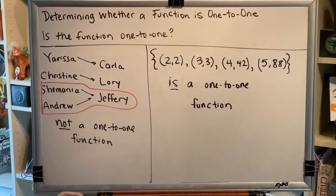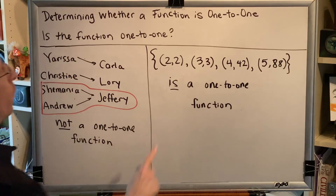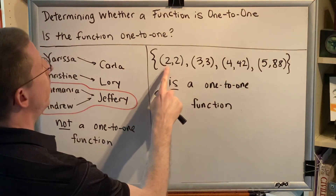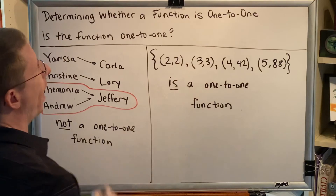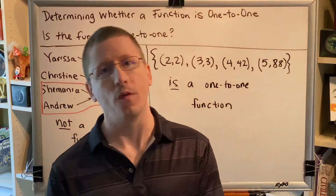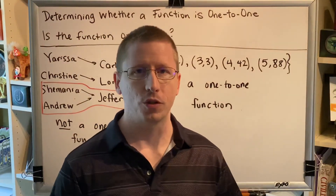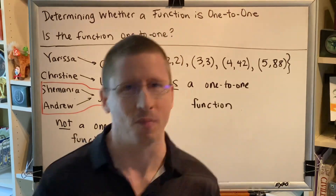You might be thinking to yourself, where did the name one-to-one function come from? Well, it turns out that any one-to-one function has the additional property that for every one input, there corresponds one output. There is a one-to-one ratio of inputs to outputs. Okay, that concludes this problem.